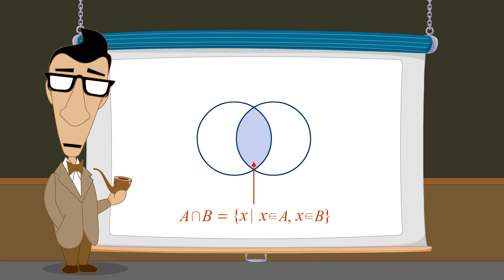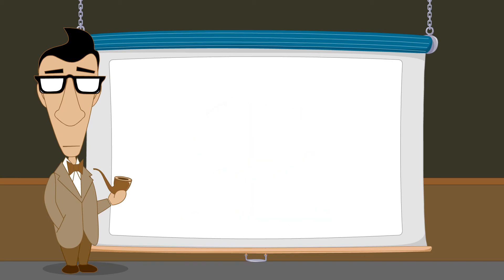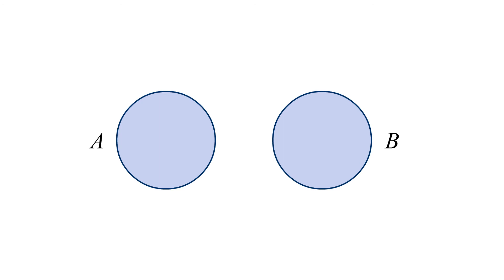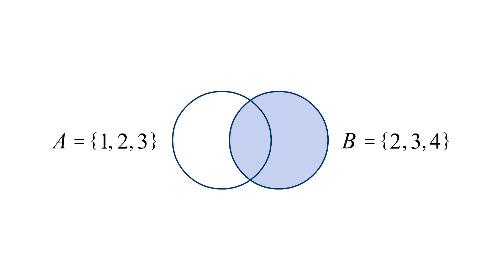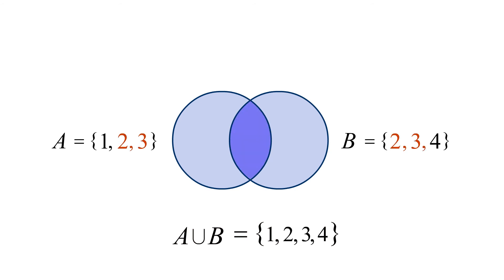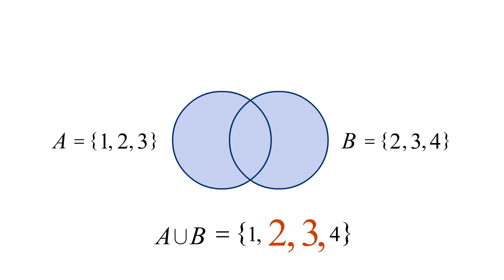Another important set operation is the union of sets. The union of two sets A and B includes all elements which are members of either A or B. If sets A and B have any elements in common, then these elements which are members of both sets are only included once in the union. For example, if set A contains the elements 1, 2, and 3, and set B contains 2, 3, and 4, then the elements which are members of A or B are 1, 2, 3, and 4. This union forms a new set containing the elements 1, 2, 3, and 4. Notice that even though 2 and 3 are members of both sets A and B, 2 and 3 are only listed once when we write the union.